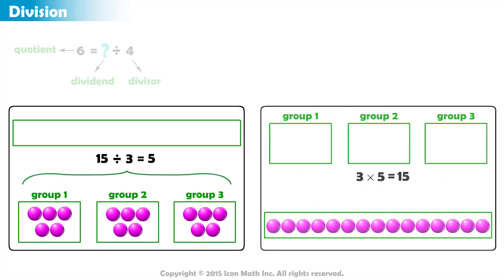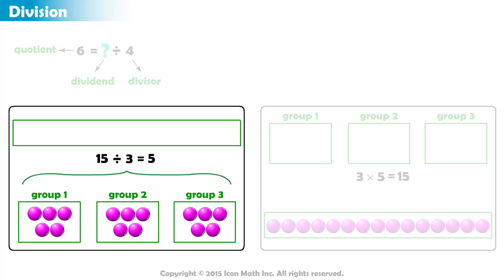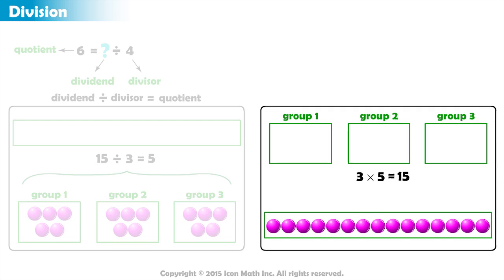In other words, for a division sentence — dividend divided by divisor equals quotient — we can express it as a multiplication like this: divisor times quotient equals dividend.